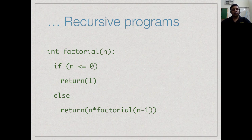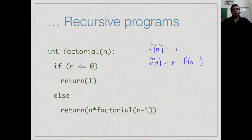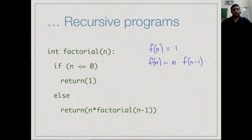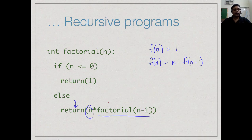Here is a translation for factorial which reflects the structure we had before: f(0) = 1 and f(n) = n times f(n-1). To make it a little more robust, instead of checking n equal to 0 we check for any value 0 or less and return 1 — so if somebody asks for factorial of minus 7 we return 1. If n is positive we go to the recursive case: compute factorial of n minus 1, multiply by n, and return the answer.